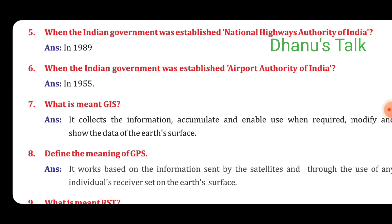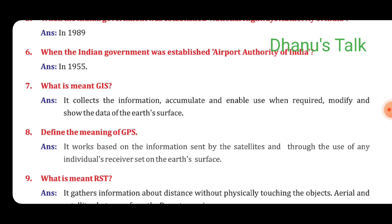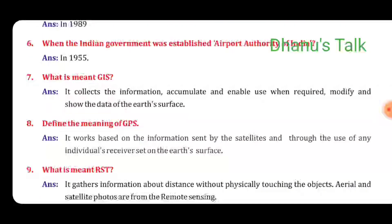Sixth question: When did the Indian Government establish the Airport Authority of India? Answer: In 1955. Seventh question: What is meant by GIS? Answer: It collects and accumulates information and enables us, when required, to modify and show data of the Earth's surface. Eighth question: Define the meaning of GPS. Answer: It works based on information sent by satellites and through the use of any individual's receiver set on the Earth's surface. Ninth question: What is meant by RST? Answer: It gathers information about distances without physically touching the objects, using aerial and satellite photos from remote sensing.